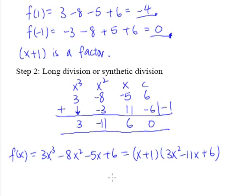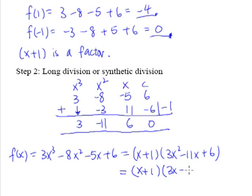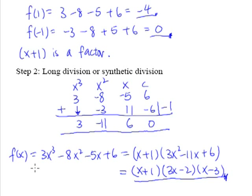Remember, the coefficient 3 can no longer be the coefficient of x cubed — you move down by one degree. So 3 becomes 3x squared, negative 11 becomes negative 11x, and 6 is the constant. This is not fully factorized yet. The quadratic expression 3x squared minus 11x plus 6 factorizes to (3x minus 2)(x minus 3). So here we go — we've completely factorized the cubic expression.